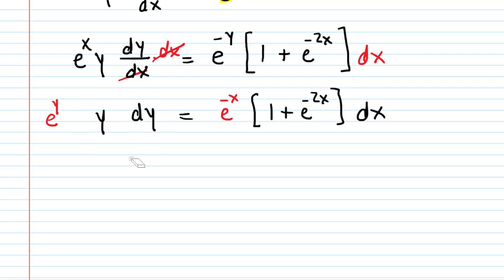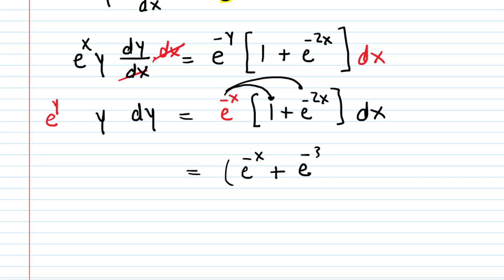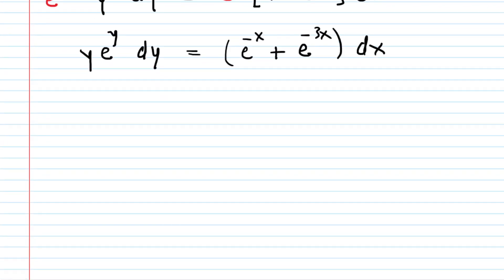So this is looking good. We have all of the y's on the left side and all of the x's on the right side. Let's take that e to the negative x and distribute it into the parentheses. That way the right-hand side becomes e to the negative x plus — and when you multiply e to the negative x and e to the negative 2x you add those powers — so you get e to the negative 3x. On the left-hand side, we can rewrite it as y times e to the y dy. So we've separated the variables: all the y's are on the left-hand side and all the x's are on the right-hand side.